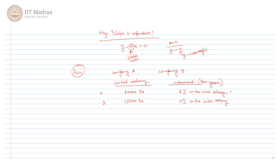So the increment for company A is 5/100 × 50,000 rupees, and for company B it is 10/100 × 45,000 rupees. The question is: which company should Ria join if she wants to earn more salary? Suppose Ria plans to work at the company long-term and wants to maximize her salary — which company should she choose?